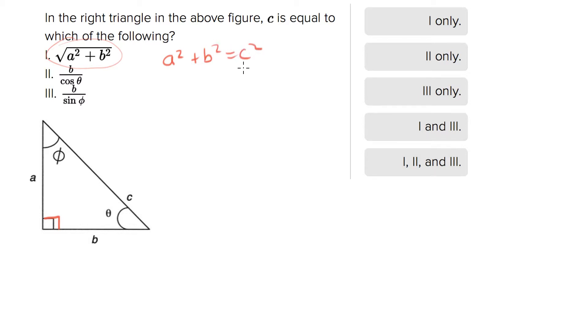But what we want is to solve for c. So if we solve this for c, we need to take the square root of both sides, and what you get is c equals the square root of a squared plus b squared, which is exactly what we have in statement one. So one does work.